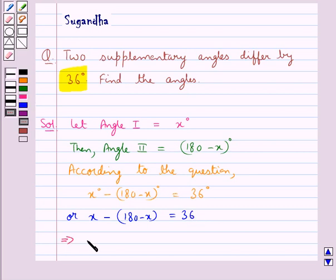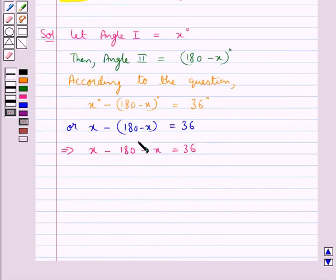This gives us x - 180 + x = 36. That is, we have opened the brackets.